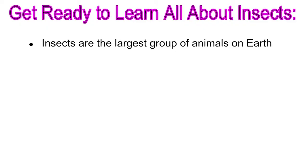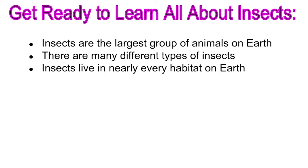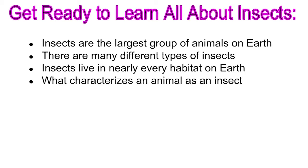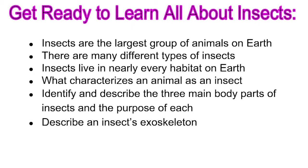Get ready to learn all about insects. Insects are the largest group of animals on Earth. There are many different types of insects. Insects live in nearly every habitat on Earth. What characterizes an animal as an insect? Identify and describe the three main body parts of insects and the purpose of each. Describe an insect's exoskeleton.